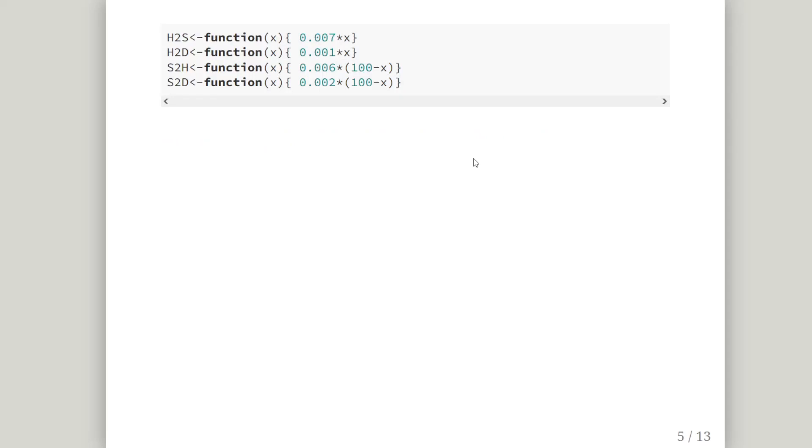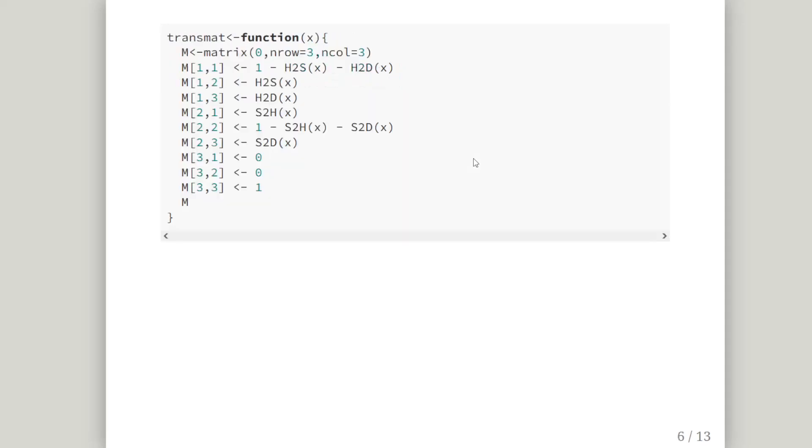So what I'm going to do is create some functions and this is a way of dealing with the information we're given. Create a function h to s, h to d, s to h and s to d. So given some input age, what is the corresponding probability of each of those transitions?